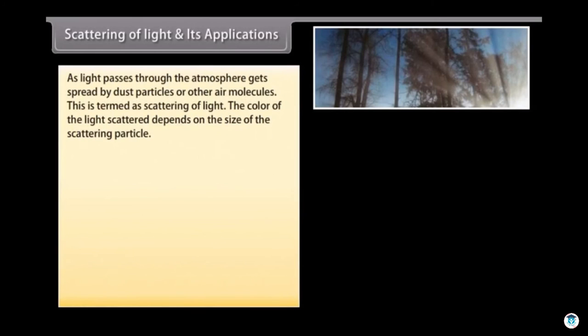As light passes through the atmosphere, it gets spread by dust particles or other air molecules. This is termed as scattering of light. The color of light scattered depends on the size of the scattering particle.